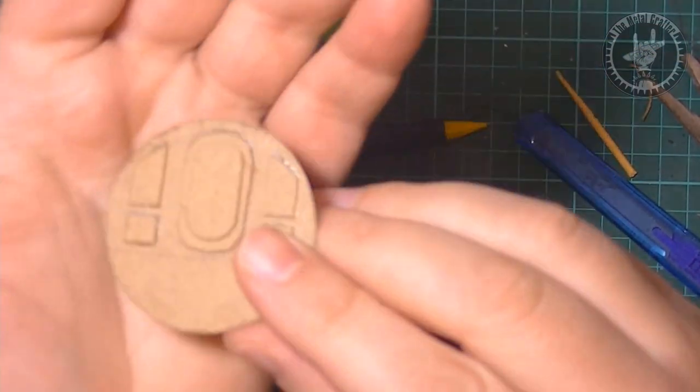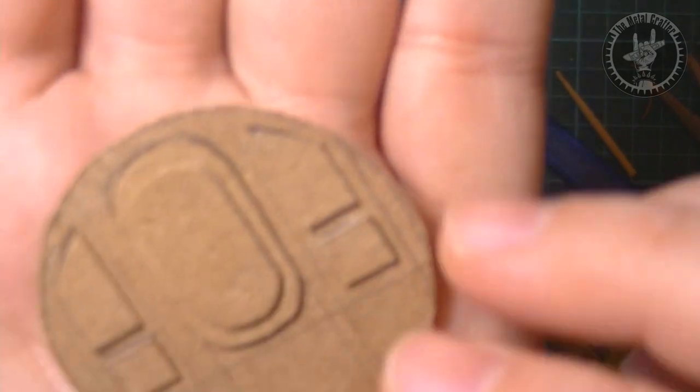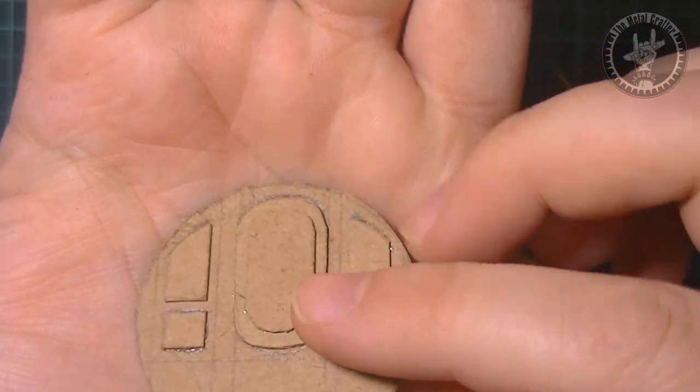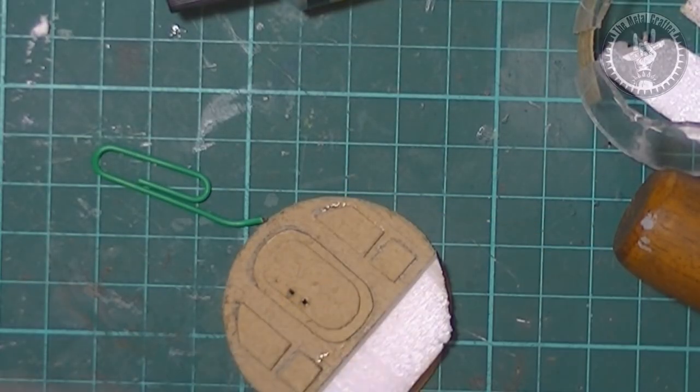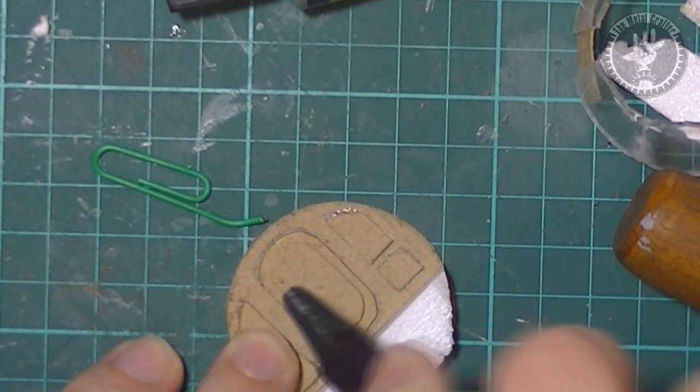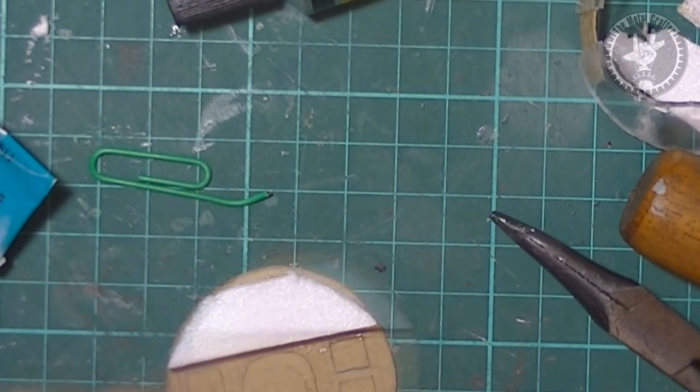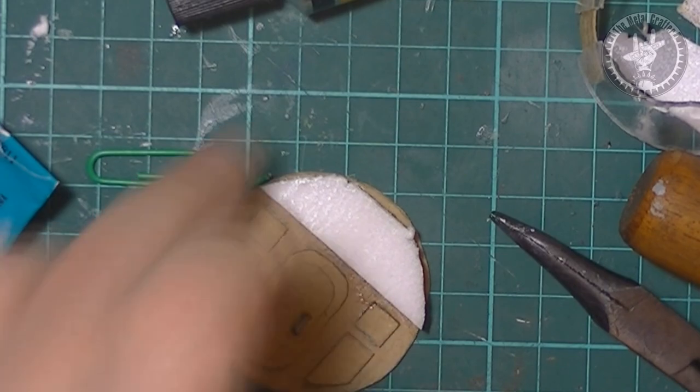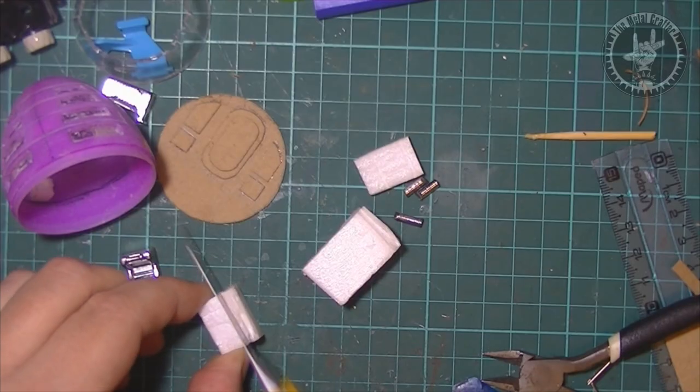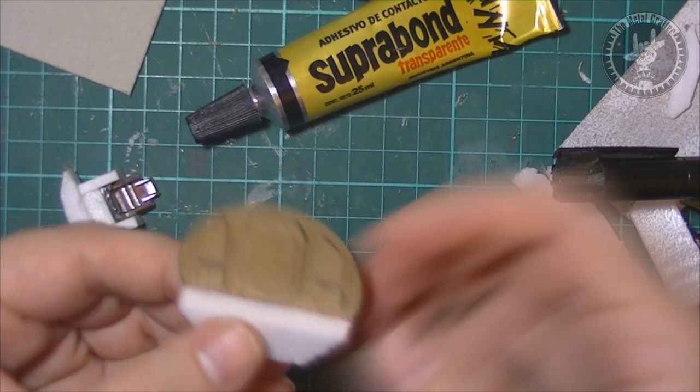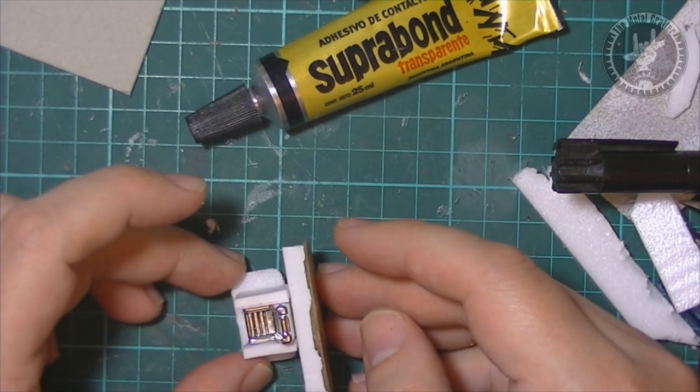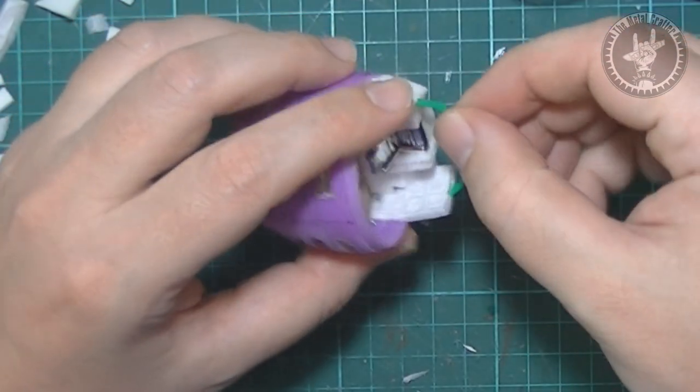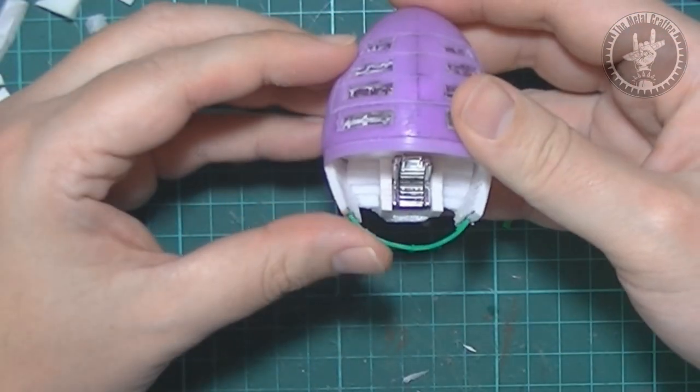I added some further details to the back with extra chipboard like panels and a hatch. Used a small paper clip piece to make the handle. Also worked on the platform with some foam and a broken car's plastic seat. Added some details like computers and some screens and railing to the front.